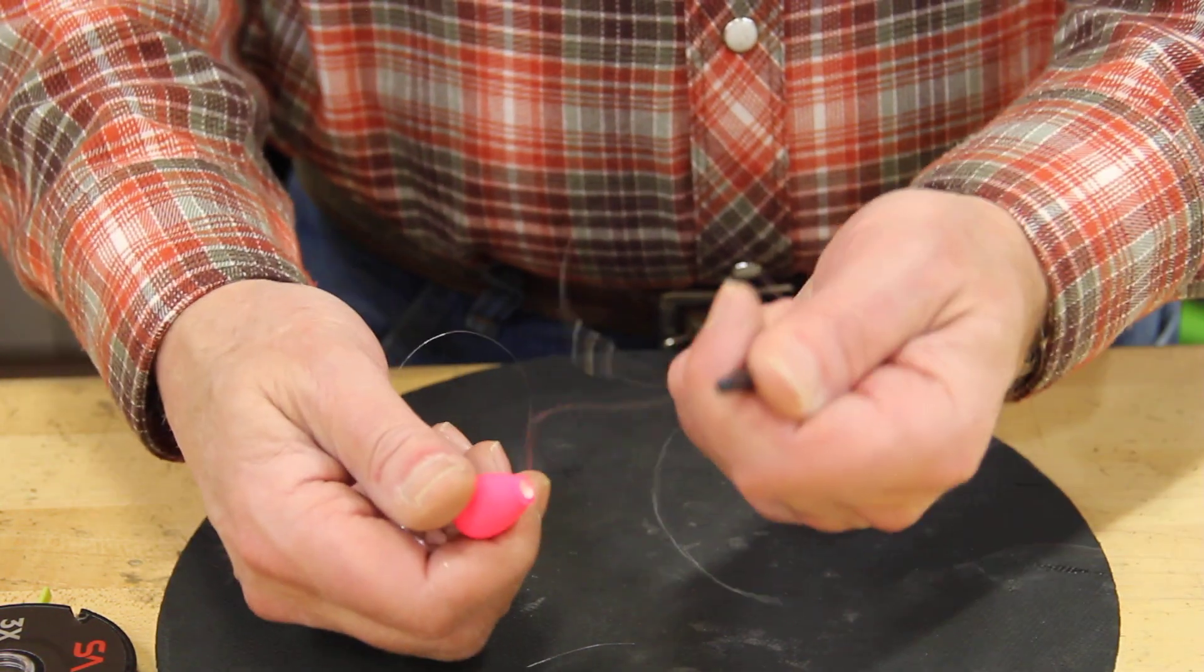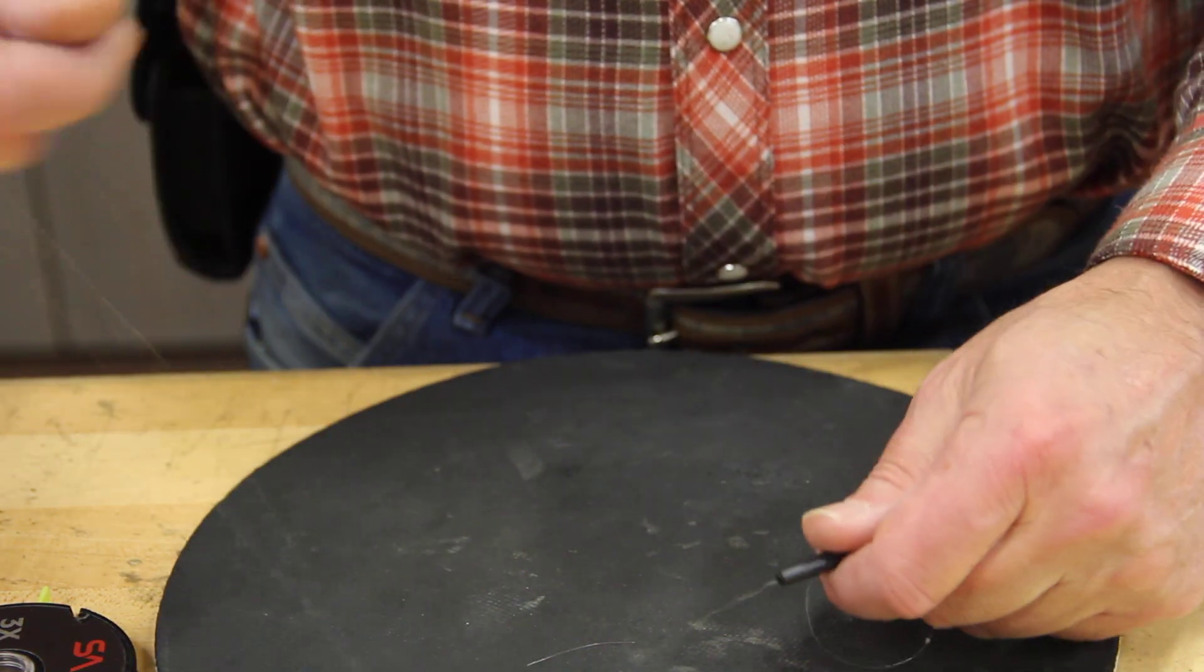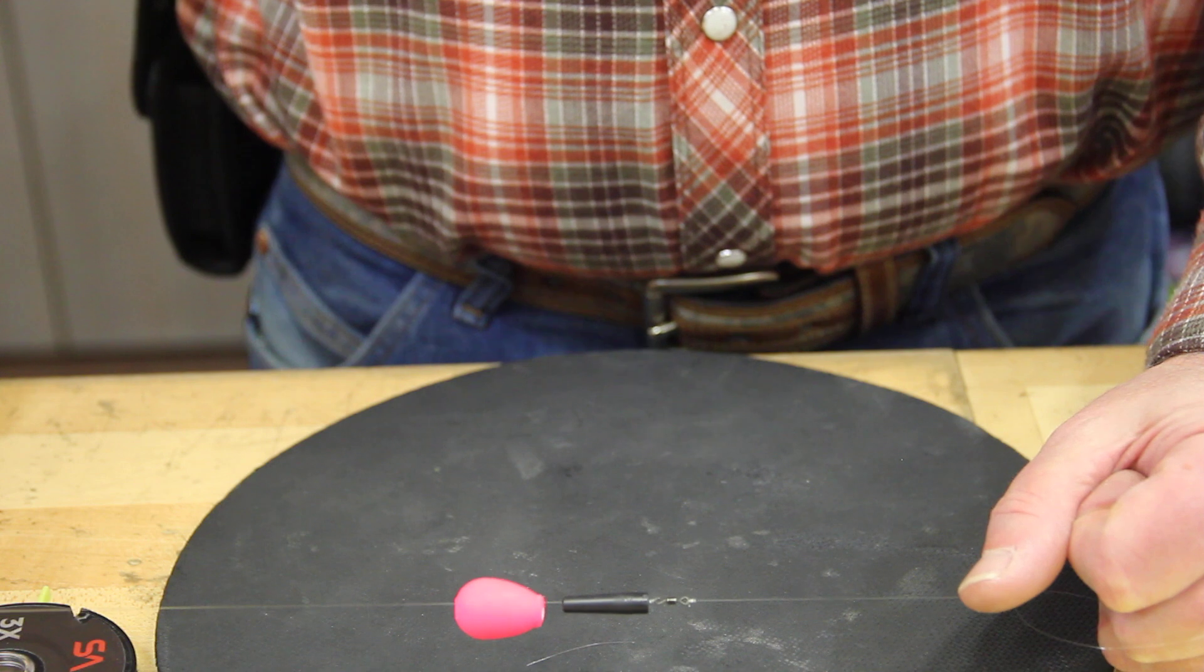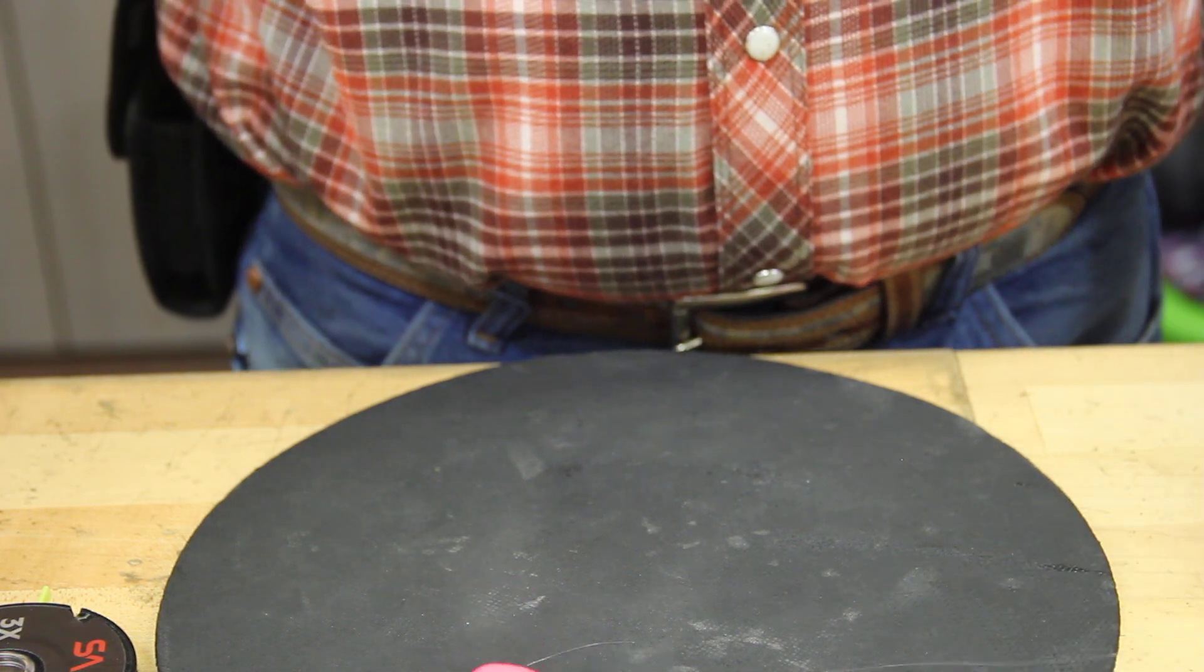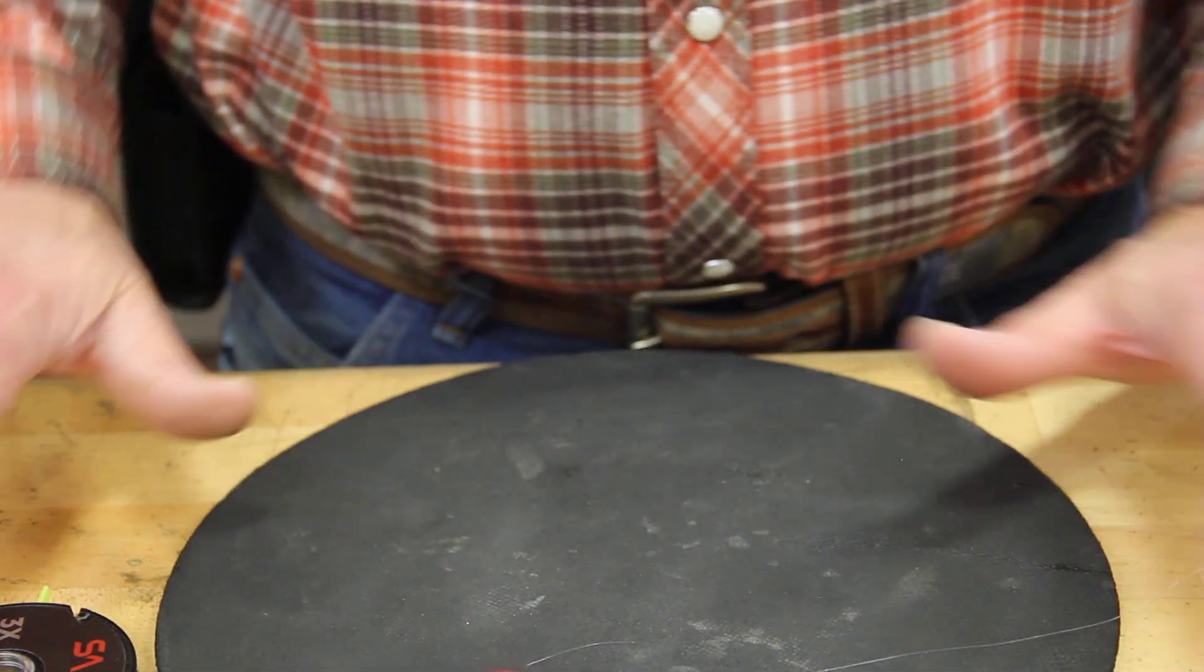And that little swivel keeps everything from falling off. This floats. This doesn't. So, you always lose this if you don't have something to stop it. So, that's what we're using that for. And you're going to use this on a good floating line.